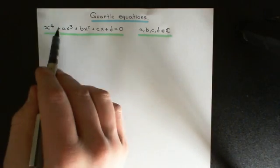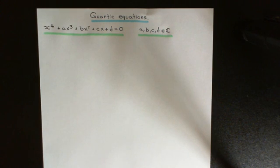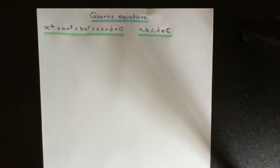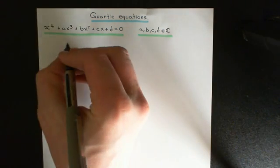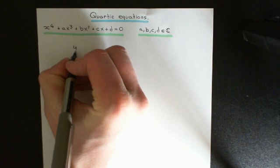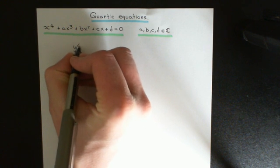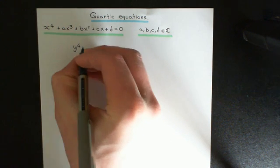We have four variables a, b, c, and d, which can be any complex numbers you can dream up. So let me outline what we're going to do to solve this. The first thing we're going to do is change this into an associated equation of a simpler form.